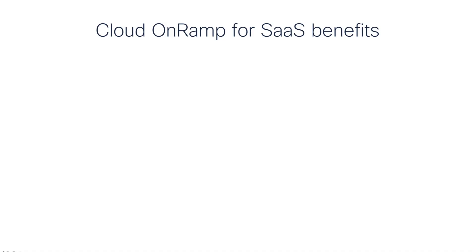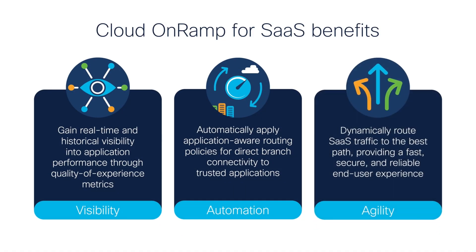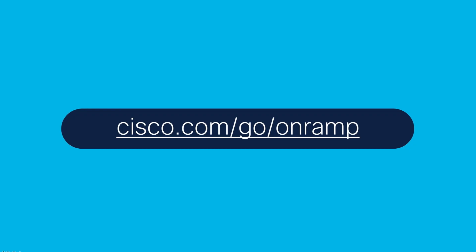But wait, there's more! Cisco also provides enterprises the flexibility to define their own applications and customize the solution to suit their specific business needs and security requirements. With ease of automation, intelligent traffic routing, and greater visibility into network performance, Cisco empowers enterprises with unique capabilities to enhance workforce productivity and network efficiency, making SaaS easy from anywhere and everywhere. Learn more about Cisco SD-WAN cloud on-ramp for SaaS at cisco.com/go/on-ramp.